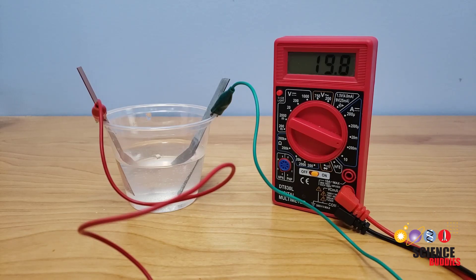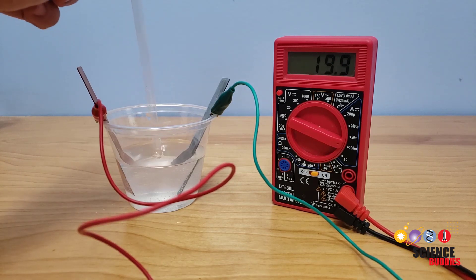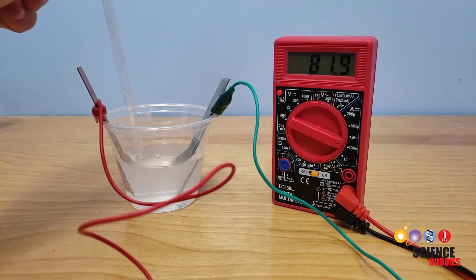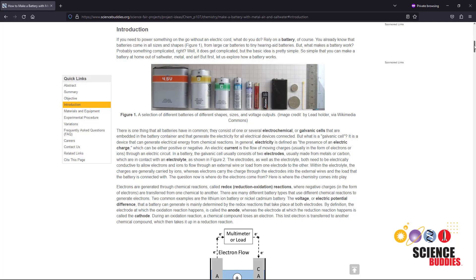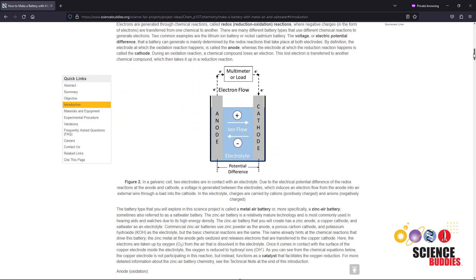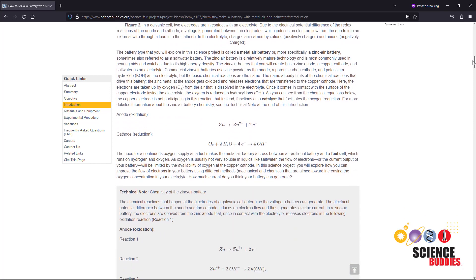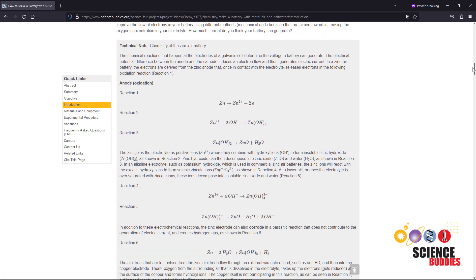Your objective in this experiment is to explore how different treatments or variables like stirring can affect the output of your battery. You can review the written instructions and background information linked in the description to understand how these variables might affect the battery.